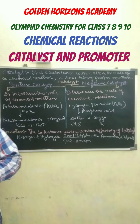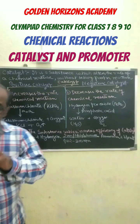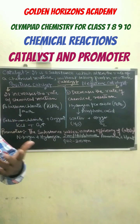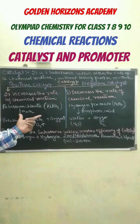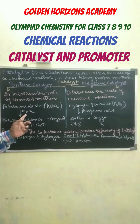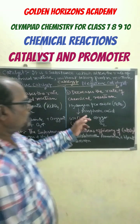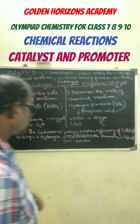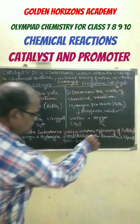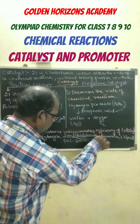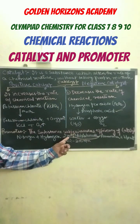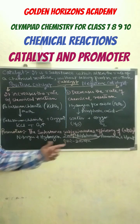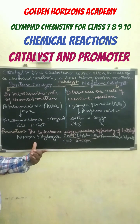So the promoter is a substance which increases the efficiency of a catalyst — for example, it increases the efficiency of iron, and here iron is acting as a positive catalyst in this reaction.